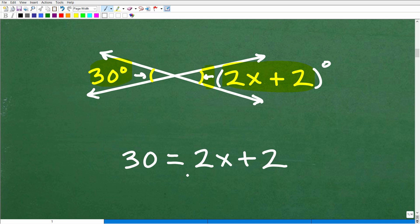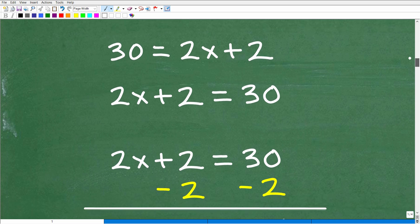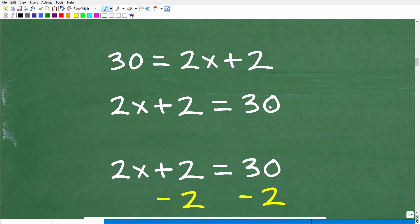Now all we have to do is solve this basic equation for x. We got 30 is equal to 2x plus 2, or 2x plus 2 is equal to 30. I always like to solve equations where the variable's on the left-hand side. It doesn't make a difference - 30 is equal to 2x plus 2, or 2x plus 2 is equal to 30.